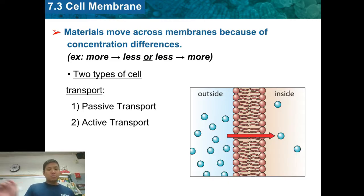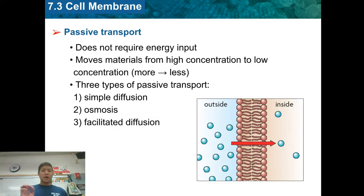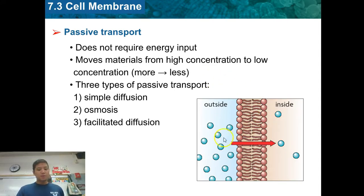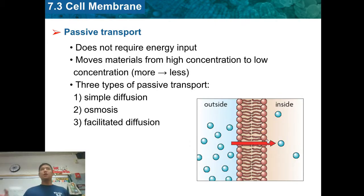Let's talk about two types of transport to get these molecules across the membrane: passive transport and active transport. Passive transport does not require energy and it moves things from high to low concentration. We have a high concentration on the outside and a low concentration on the inside. This is completely free — does not require any energy.